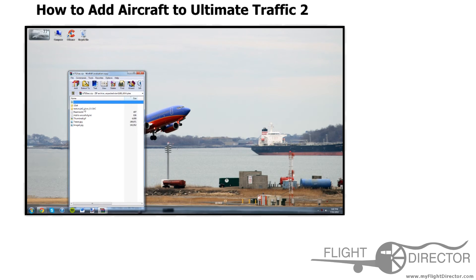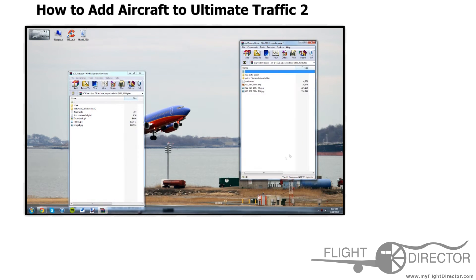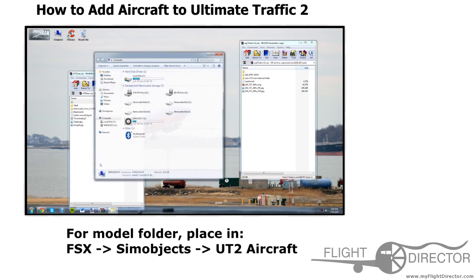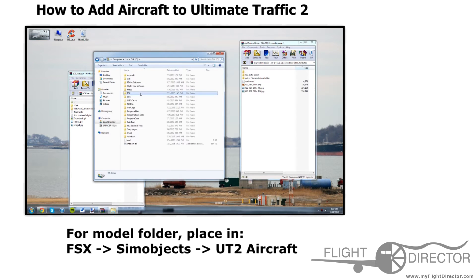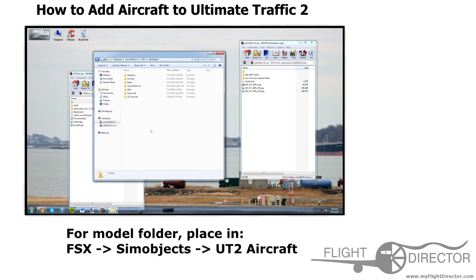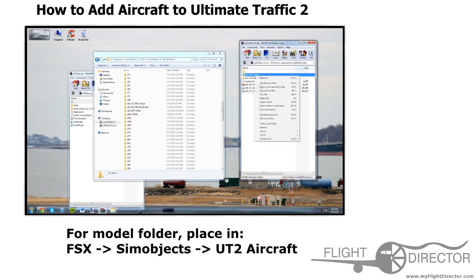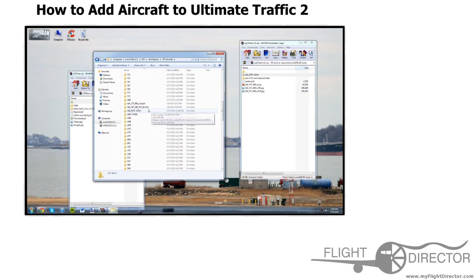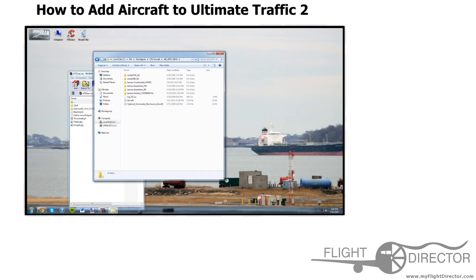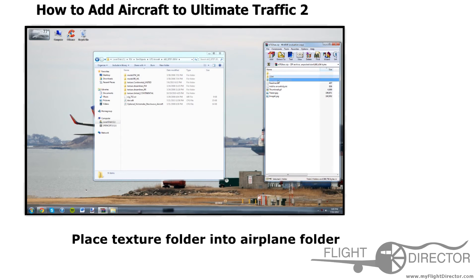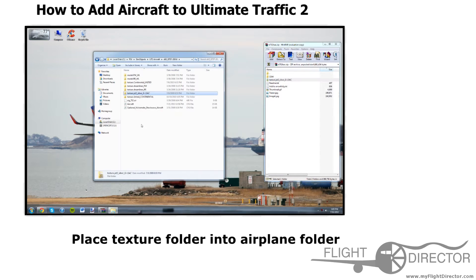So now, here's the texture file that we downloaded just now, and then here's the model file — AIG Boeing 737-200 winglet, and the texture. So now let's go to Computer, go to your flight simulator folder. And then this is just like our aircraft, only there's one change. So go to Sim Objects now, and instead of going to Airplanes, go to UT2 Aircraft. Let's open up. I've already downloaded this plane and installed it, but for you, you would just copy and paste it in here. And now what you want to do is move the texture in here.